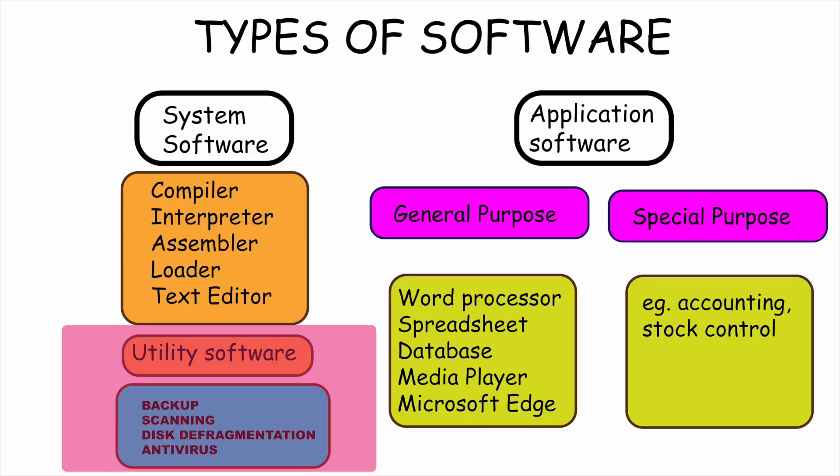Types of software. Software can be categorized in various ways. Number one, you have system software. System software is a program specifically designed to control various activities of a computer system. It manages the smooth working of the hardware as well as software components of the computer.